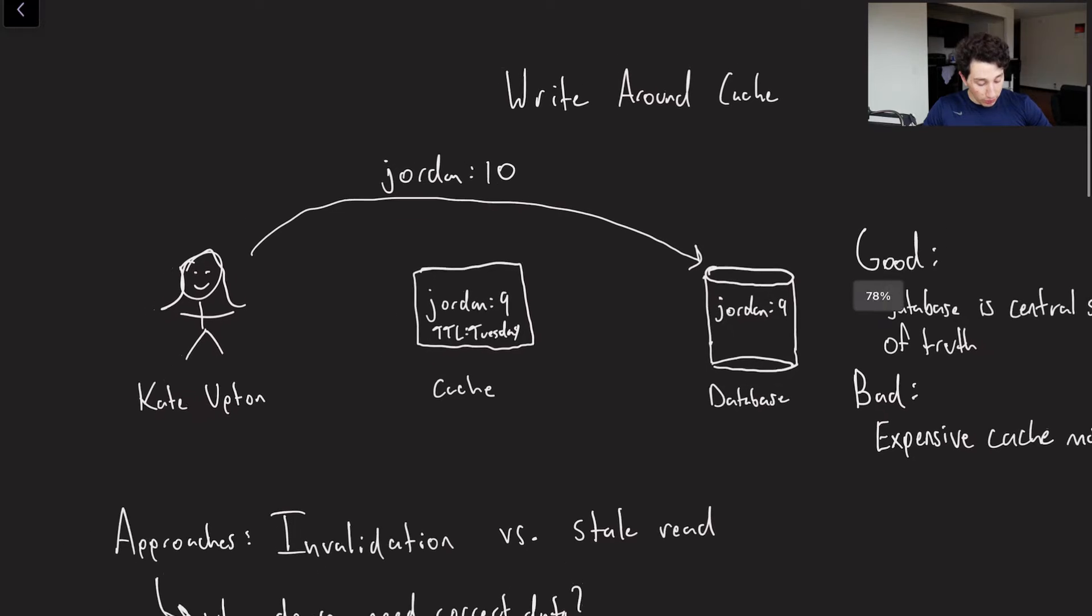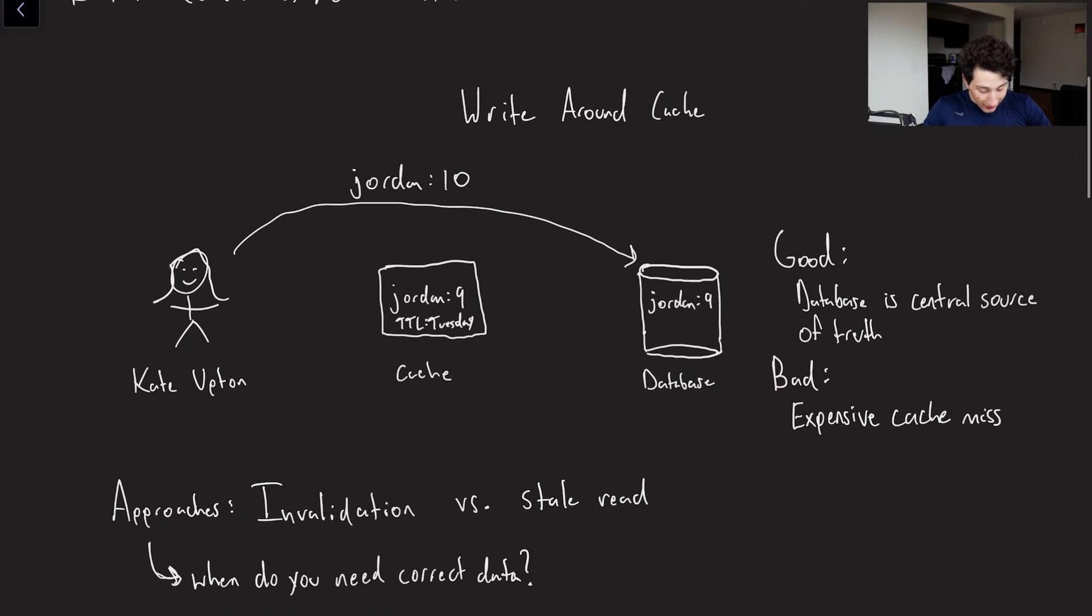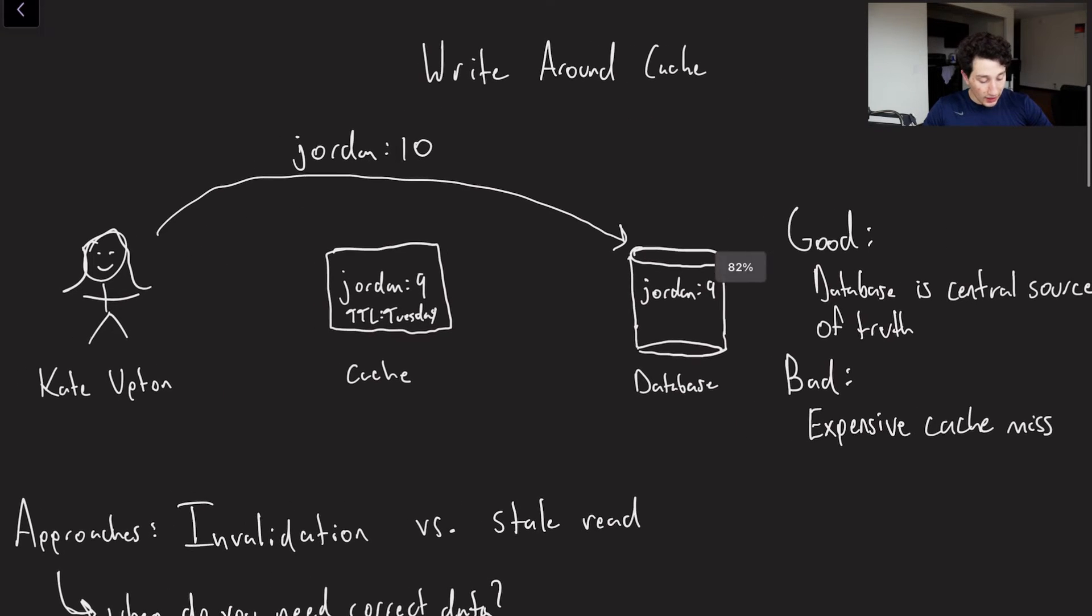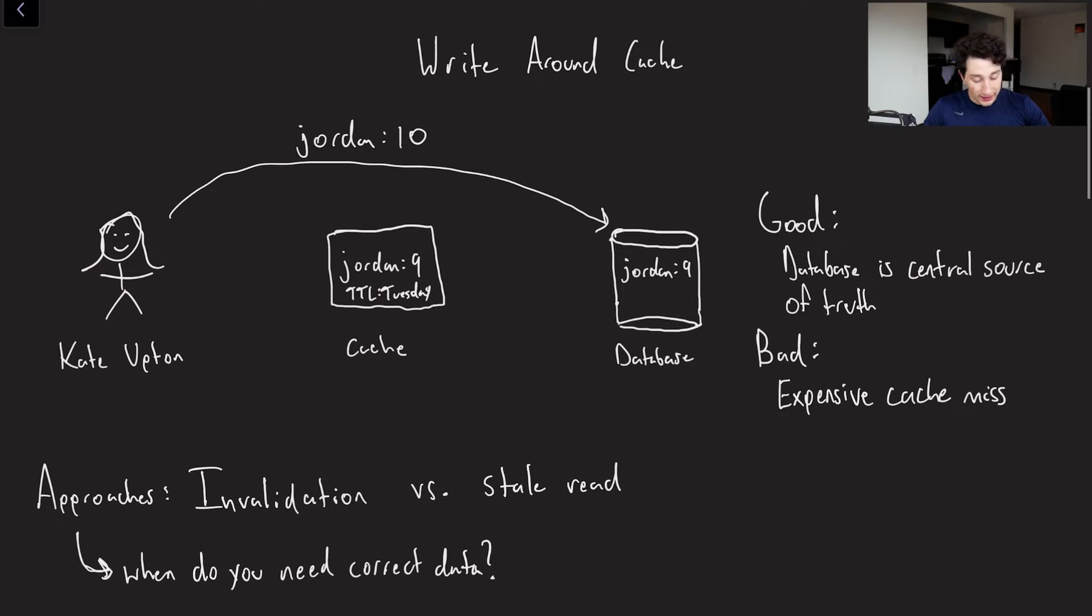So we're going to be talking about three different ways of actually going ahead and writing to our databases and getting that correct data in our cache. So let's start with the first one, which is going to be the most simple and most similar to what you would do if you didn't have a cache, which is you would just go ahead and write to the database like normal. So the reason this is called a write around cache is because we're literally writing around it, as you can see right here.